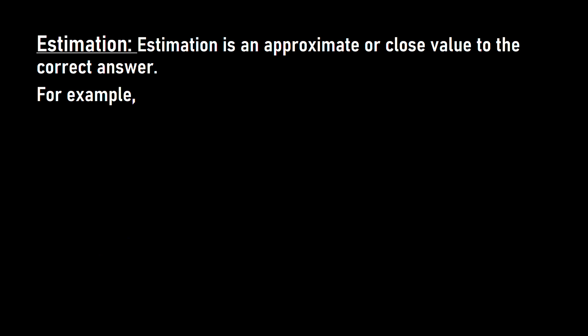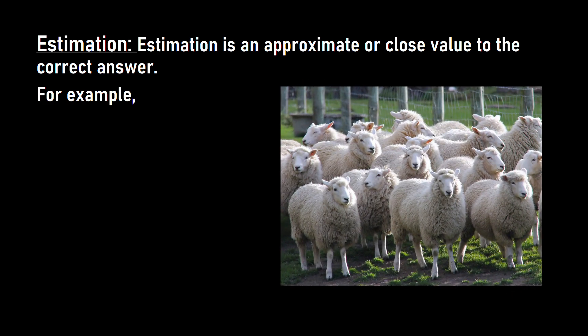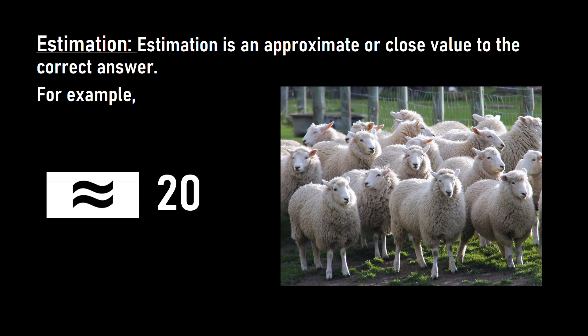Estimation is nothing but an approximate or close value to the correct answer. It is not the correct answer but it is approximately equal to. For example, here I have a picture. In this picture a herd of sheep is seen. I will not count the sheep — by looking at it I will just say there are around 20 sheep in the picture, approximately equal to 20 sheep.